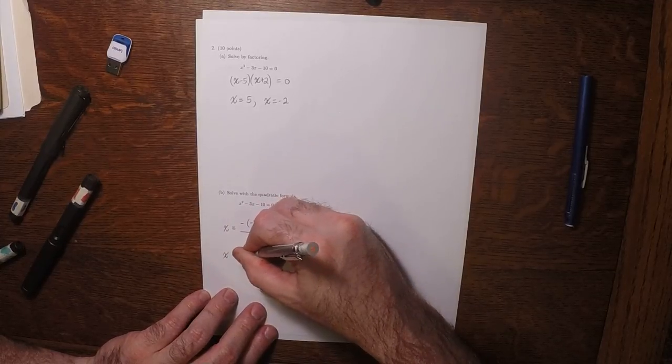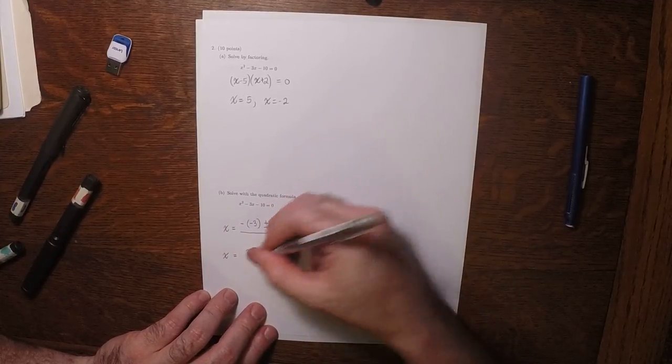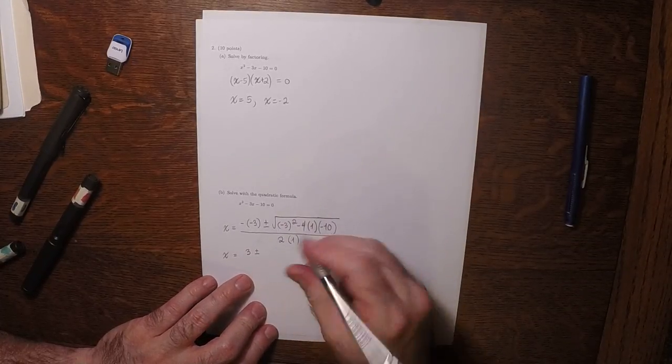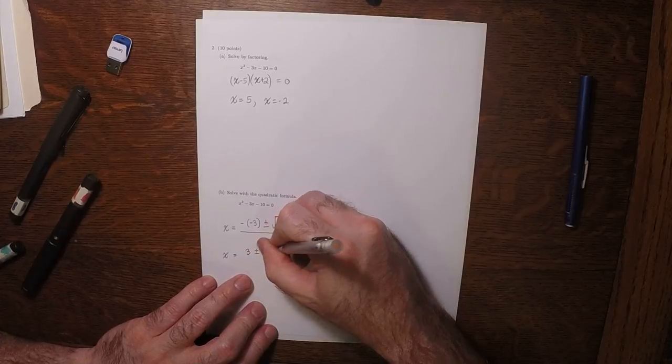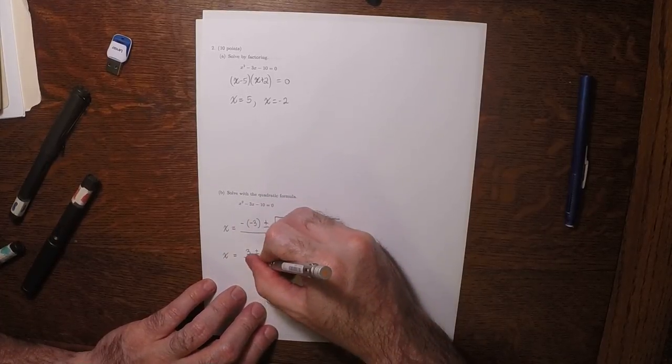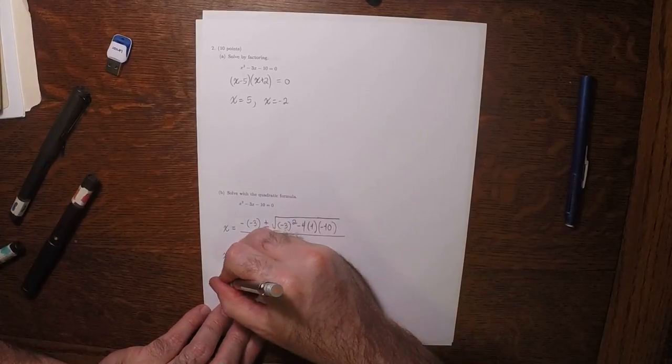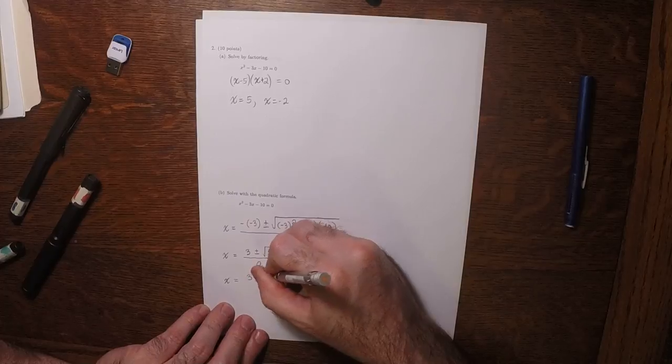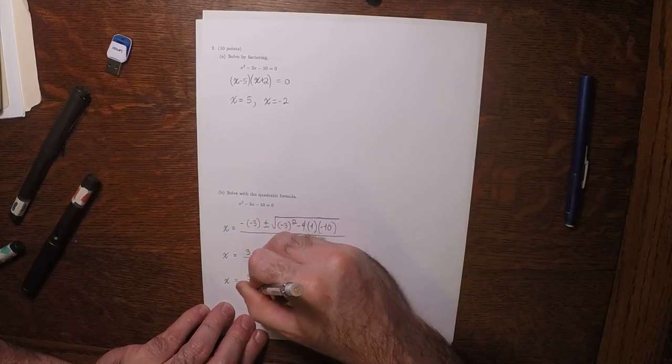So x is 3 plus or minus the square root of 9, and then plus 40, so the square root 49 over 2. So 3 plus or minus 7 over 2.